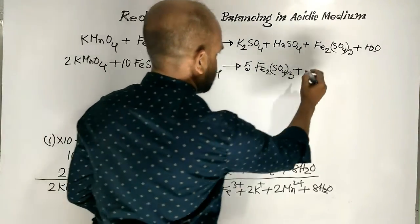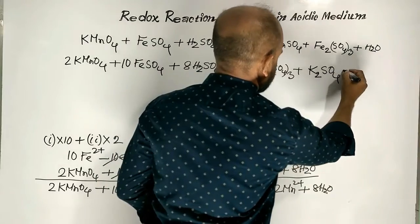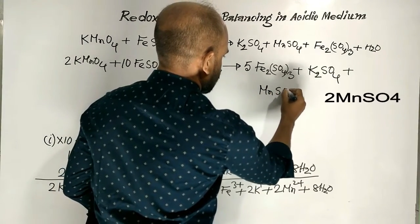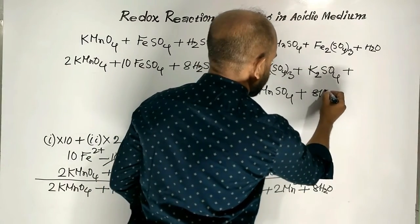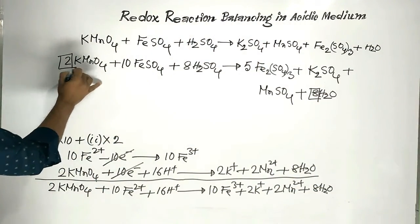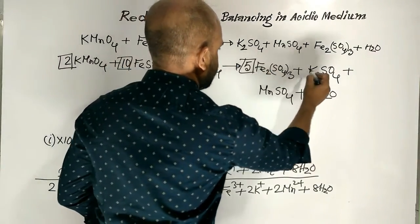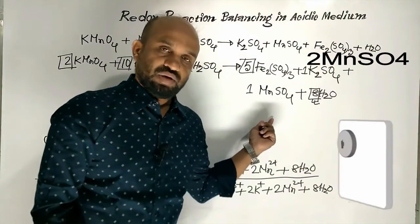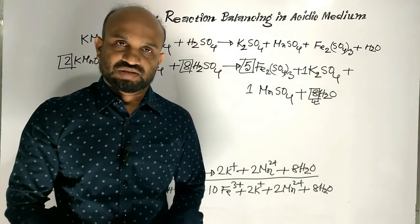2 Potassium Sulphate — that is simply Potassium Sulphate — plus 2 Manganese ions, meaning Manganese Sulphate, plus 8 molecules of water. So the balanced redox reaction of Potassium permanganate and Ferrous Sulphate is now complete. Thank you very much.